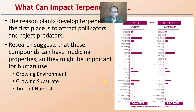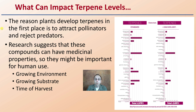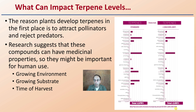What can impact terpenes? Plants develop terpenes in the first place to attract pollinators or repel predators, and research suggests these compounds can have medical properties. What can impact them includes the growing environment, the growing substrate, and the time of harvest. For example, data from one company shows that adding UVA and UVB light increased total terpene concentrations — particularly myrcene and limonene — by 40 to 50 percent.